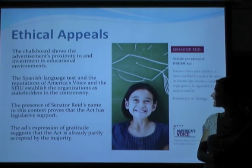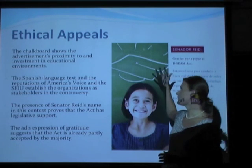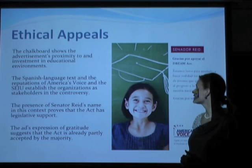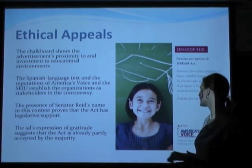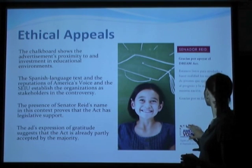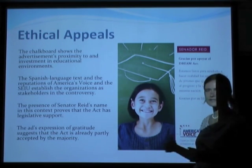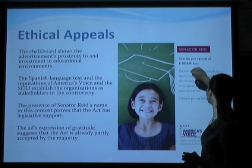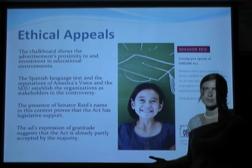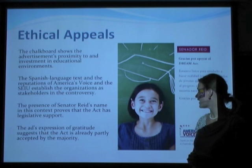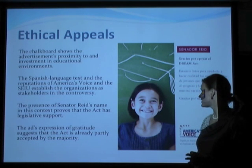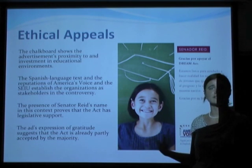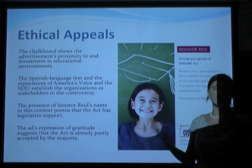For ethical appeals: the chalkboard indicates that the girl is in school and therefore is related to the DREAM Act. The Spanish language text and the reputations of America's Voice and the SEIU establish the organizational legitimacy of the stakeholders in the piece. Senator Reid's name proves that the act has legislative support, since he did get it passed in the Senate. And the act's expression of gratitude suggests that the act is already partly accepted by the majority — therefore, by tapping into this support for the act, you become part of that majority as well.